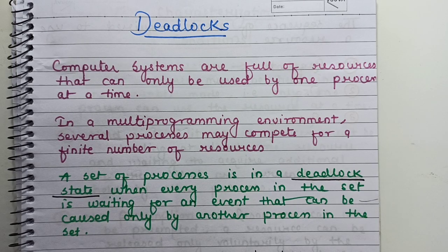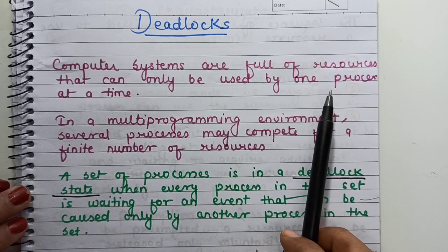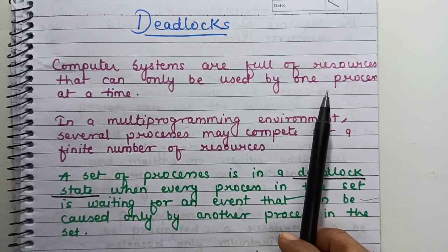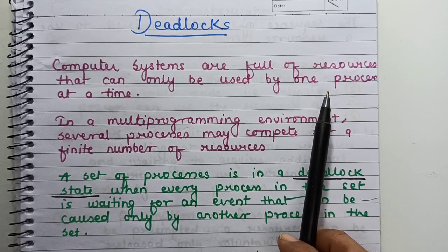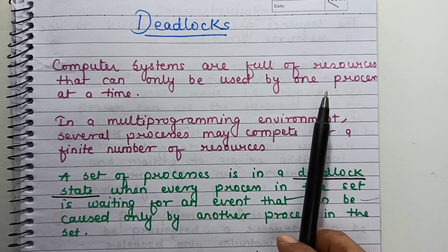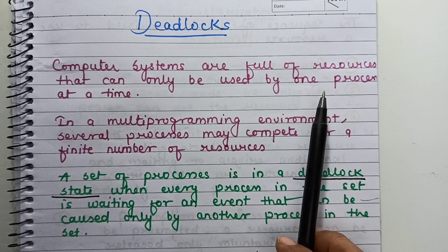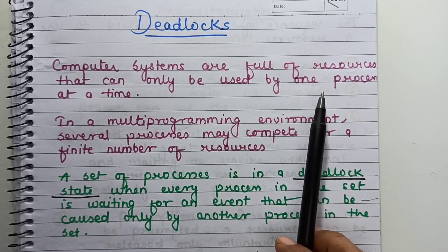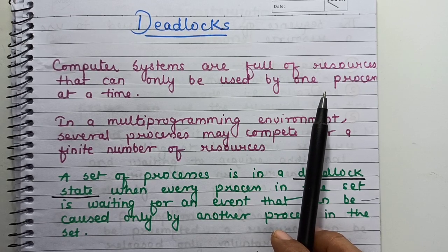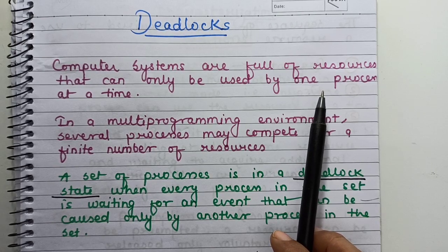Let's start deadlock. What is deadlock? Computer systems are full of resources that can only be used by one process at a time. Common examples include printers, tape drives, and slots in the system's internal tables. Having two processes simultaneously writing to the printer leads to gibberish.